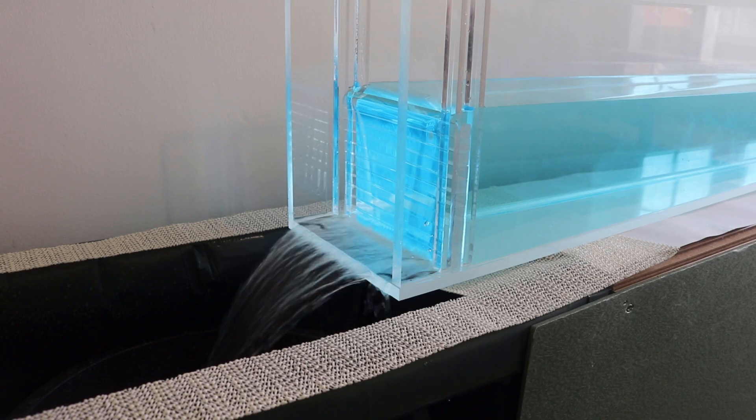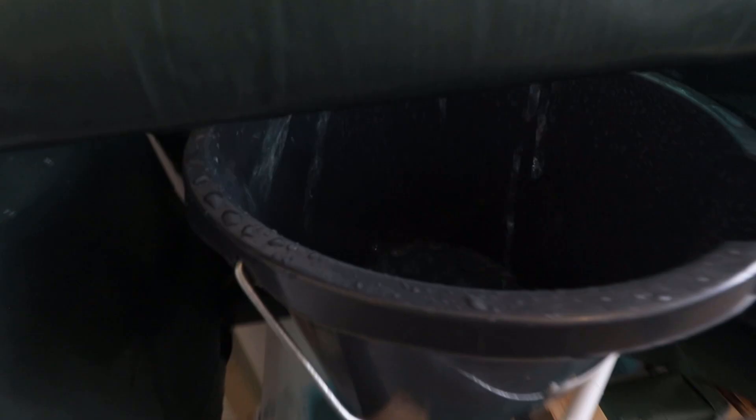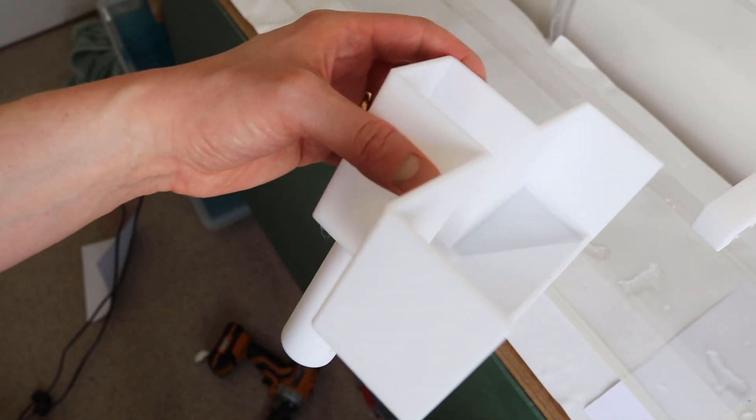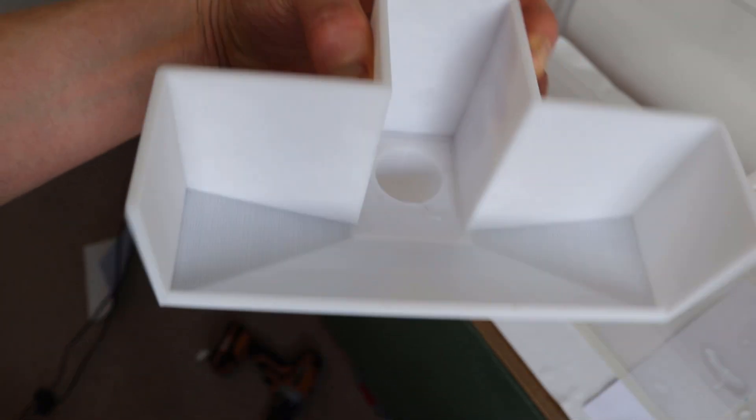And finally, we want to redesign the outlet of the flume so we don't have water splashing everywhere. For this, I designed a guard that would hopefully catch all of the excess splashes.